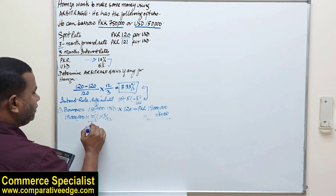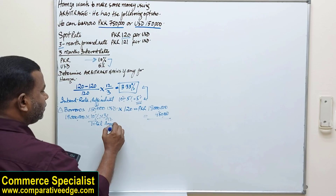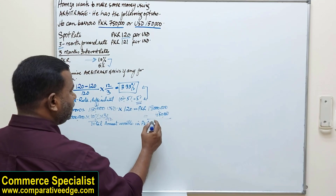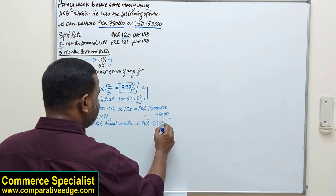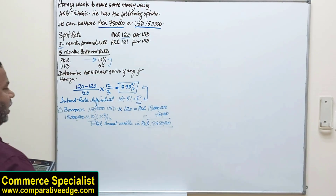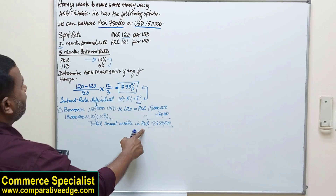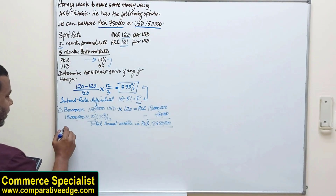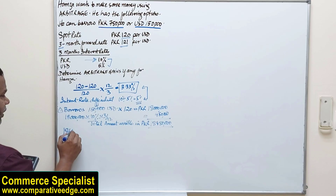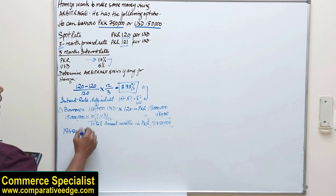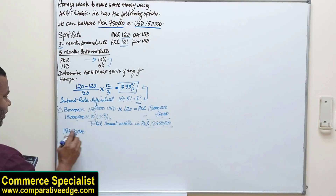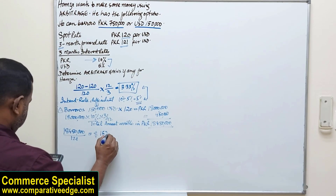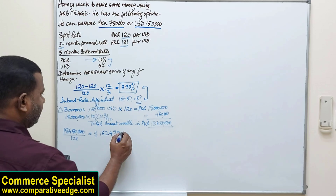After 3 months, the interest earned is PKR 450,000, so the total amount available in Pakistani rupees is PKR 18,450,000. Now, using the 3-month forward rate of 121, he converts this back into US dollars: 18,450,000 ÷ 121 = USD 152,479.